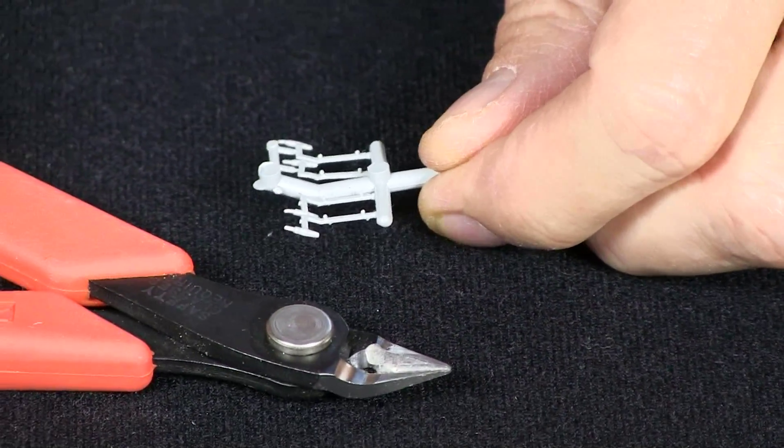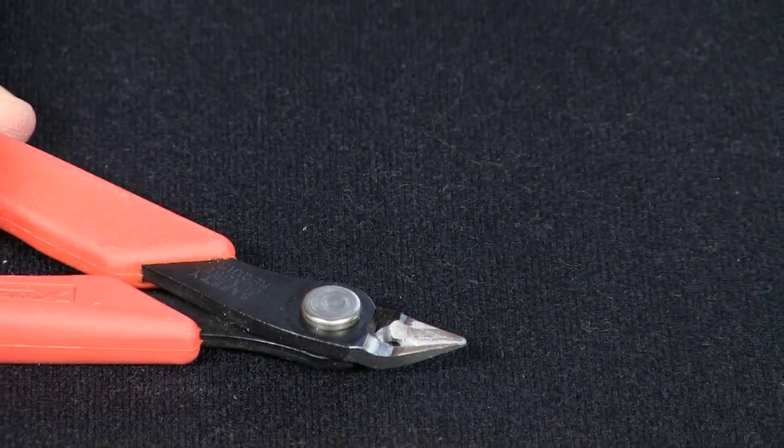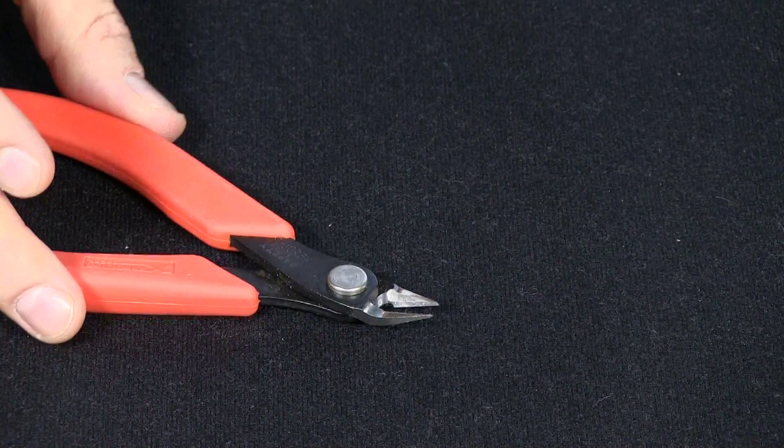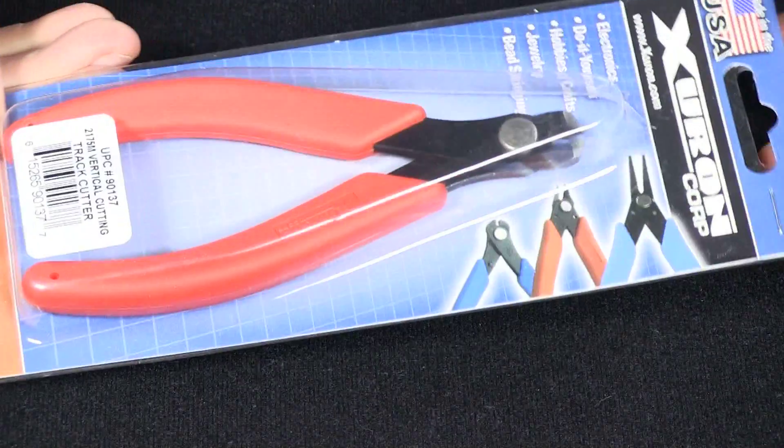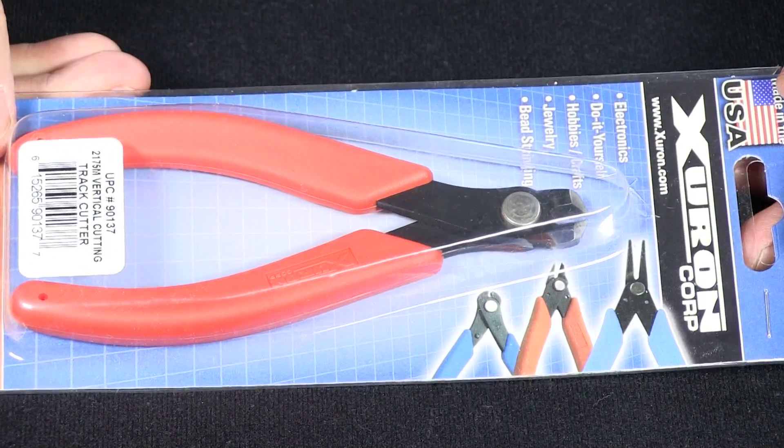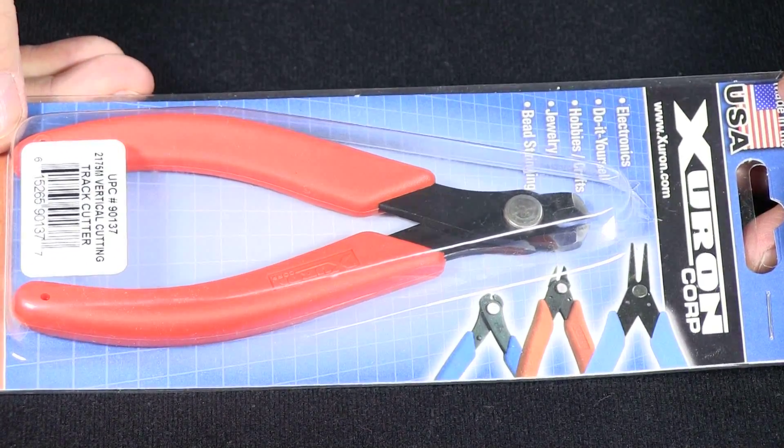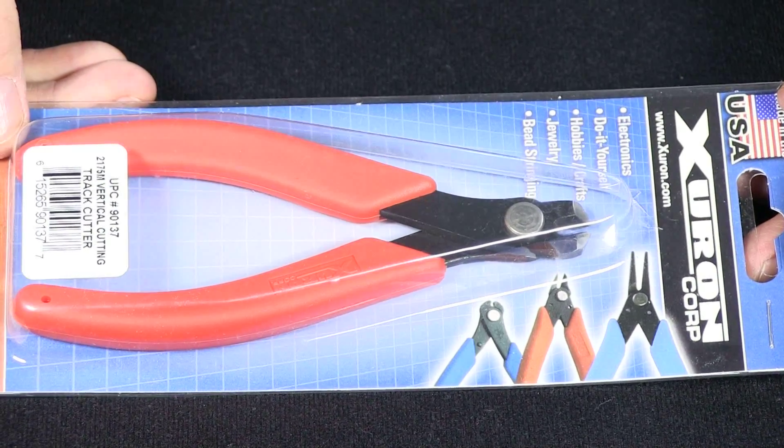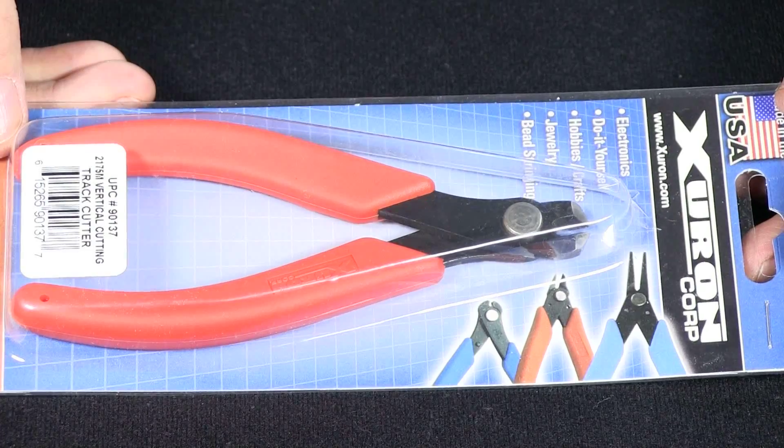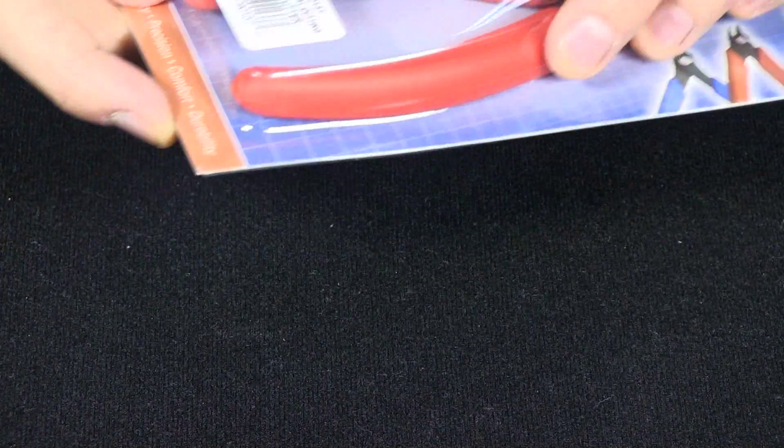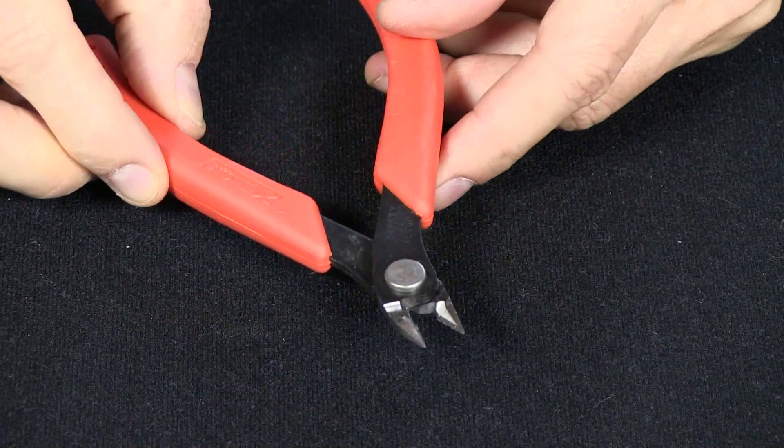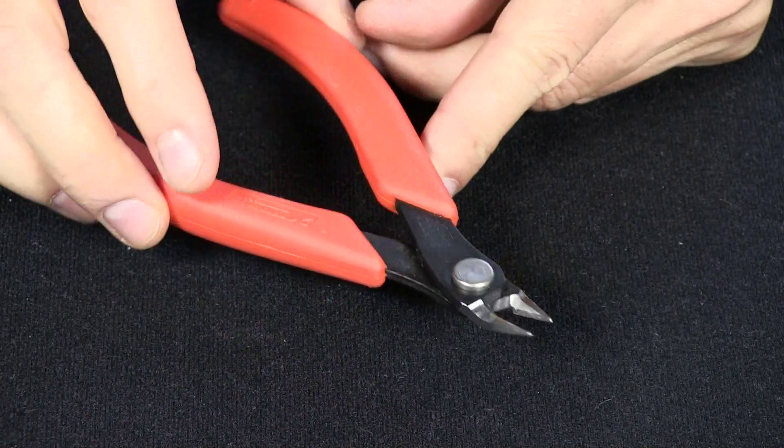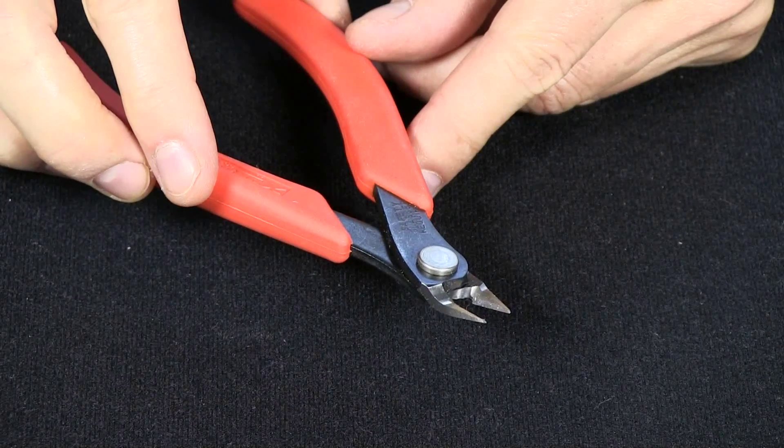They recommend not using this for anything but plastic so I haven't, because you don't want to dull the blade. They make other cutters, like for example this is some Xuron track cutters I haven't even taken them out of the package yet, and these are made to be tough enough to go through the metal of Code 83 or Code 100 rail or whatever. But definitely the plastic one for sprue, you just don't want to use it on anything hard and make sure that they stay nice and sharp and will always cut good.